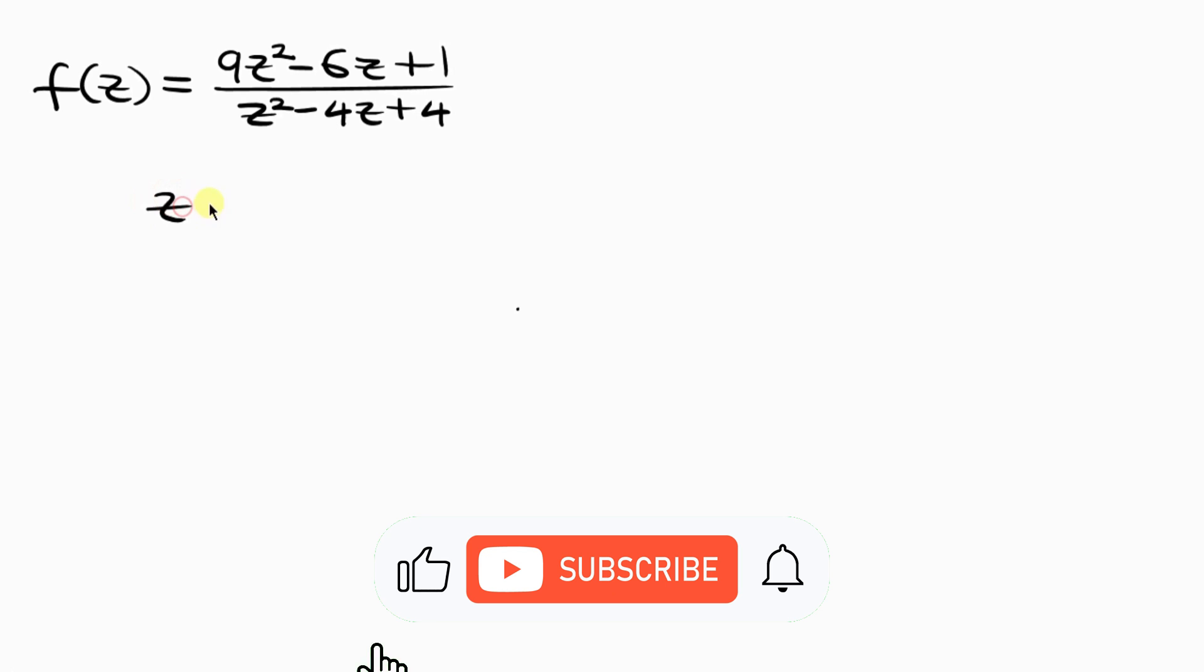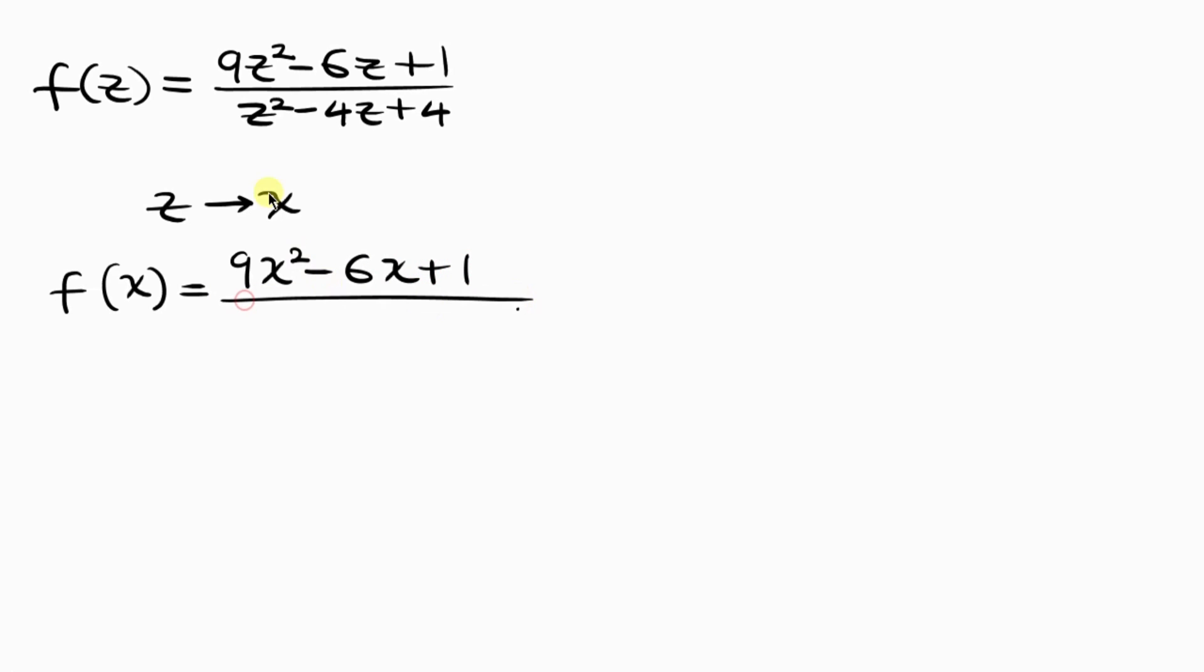Let's go ahead and replace z with x in order to get our final answer. So f of, remember z is being replaced with x, so x equals (9x² - 6x + 1)/(x² - 4x + 4), and this is our final answer.